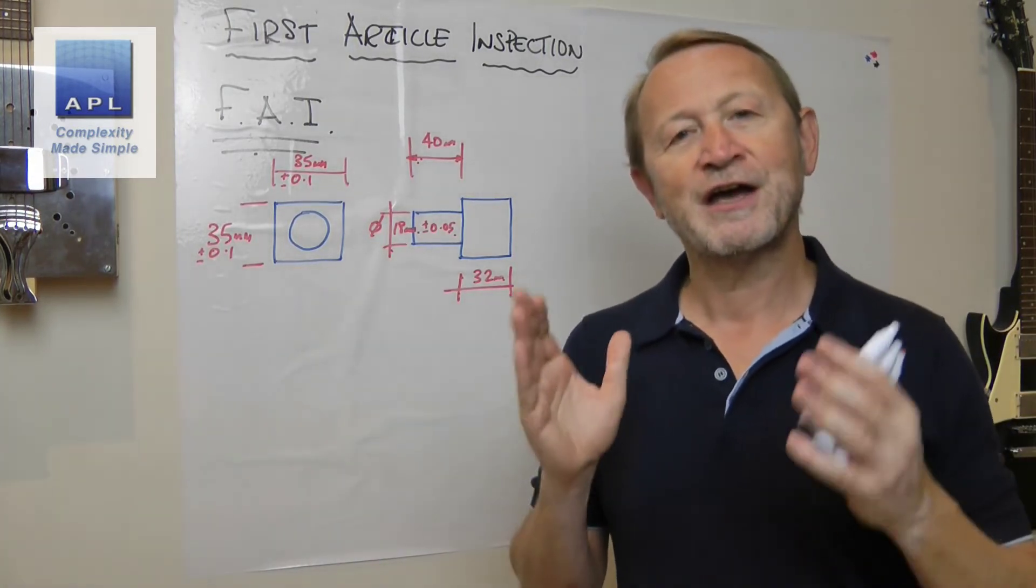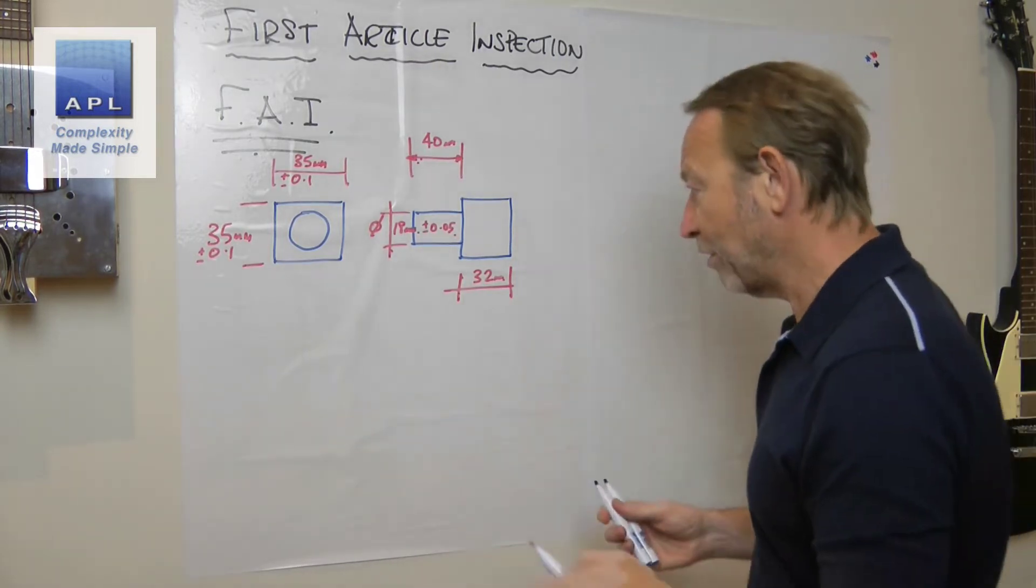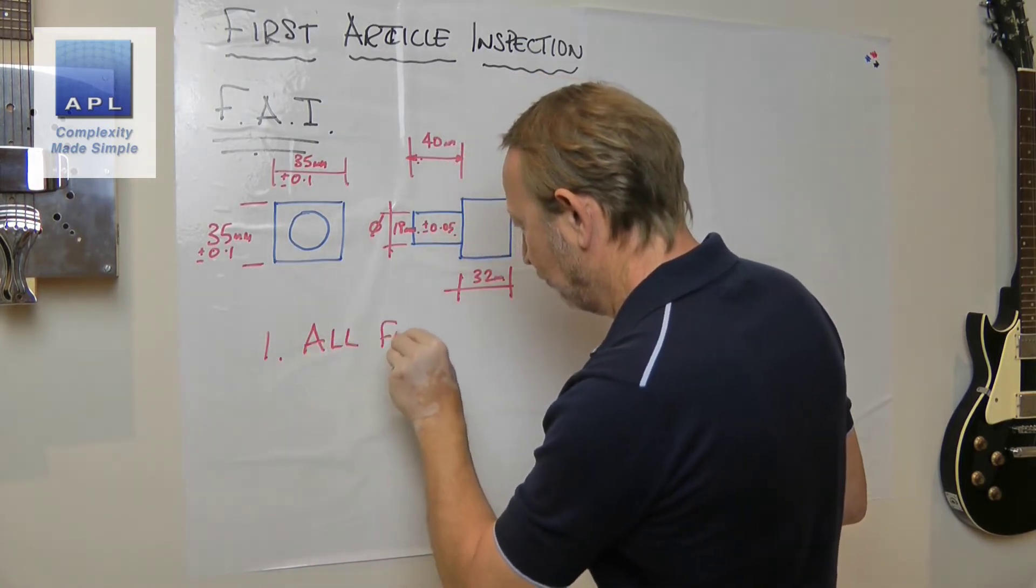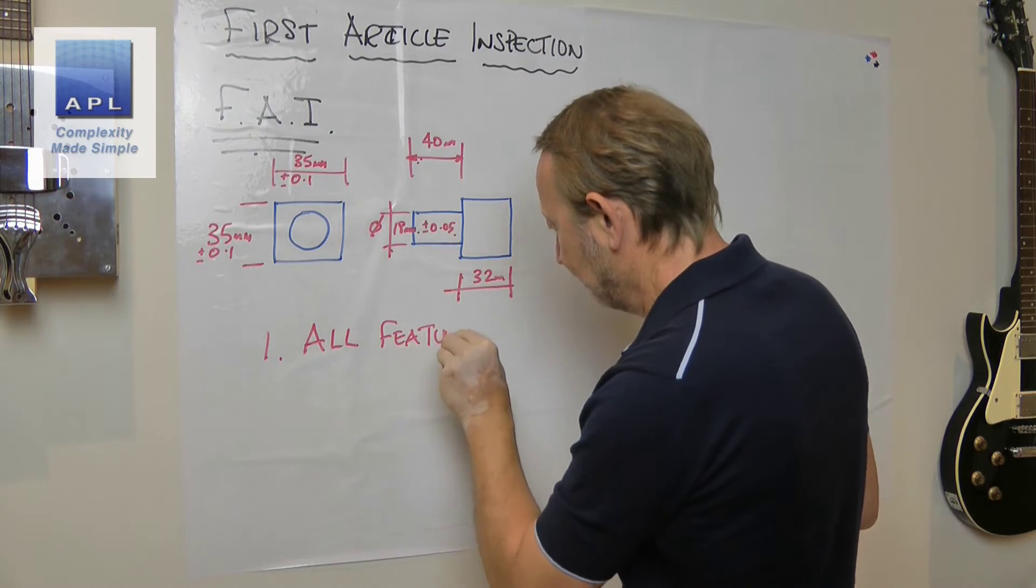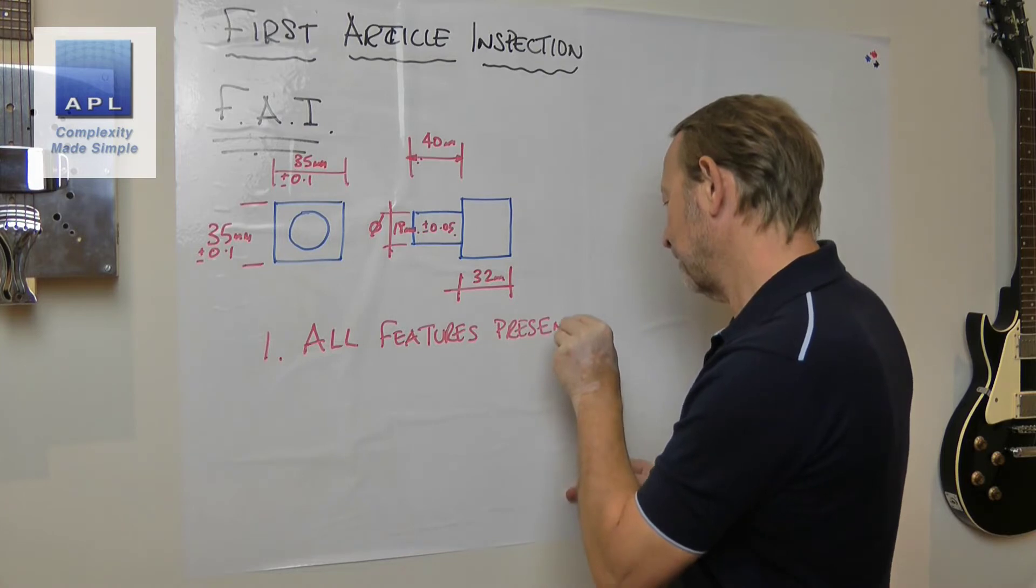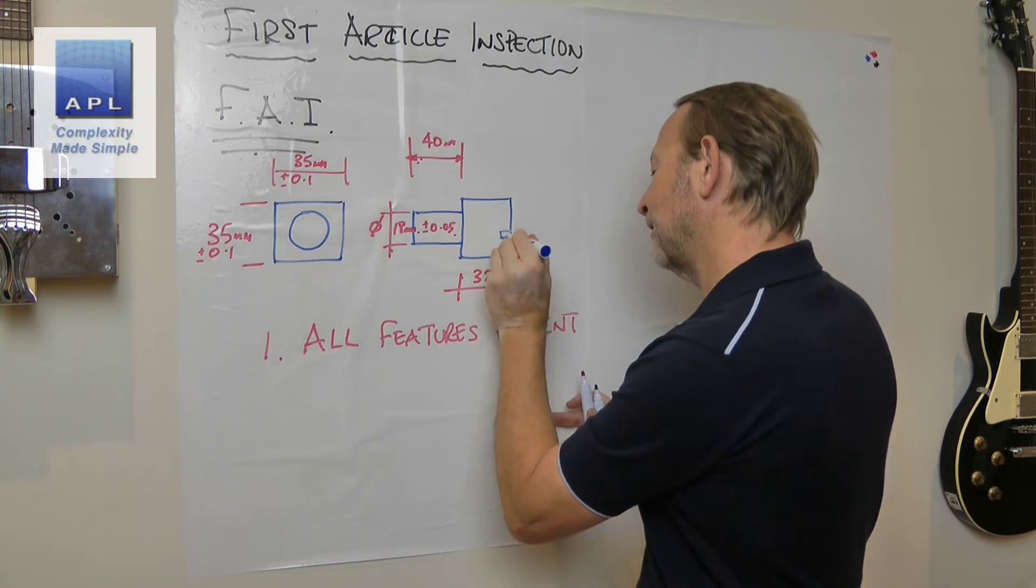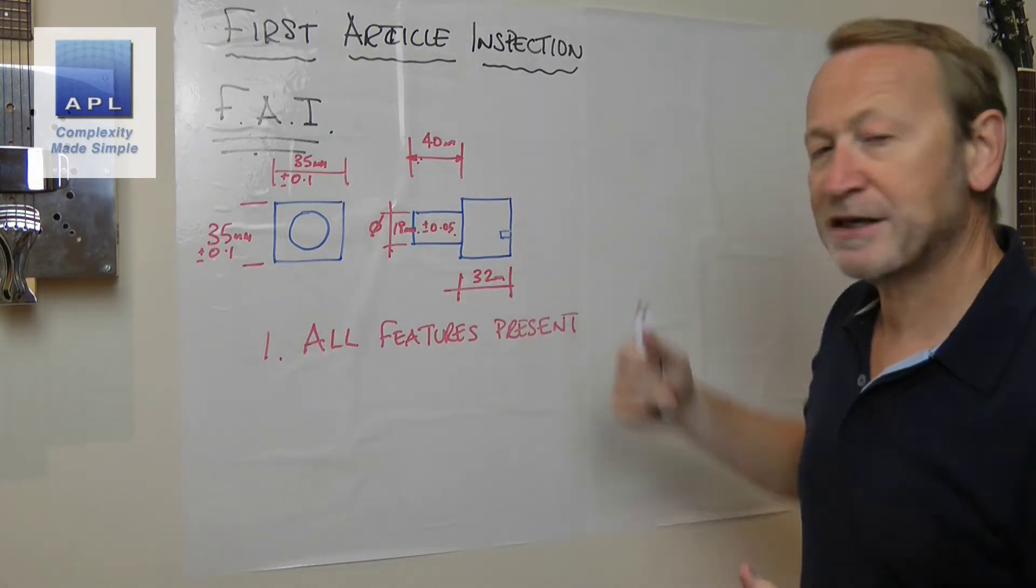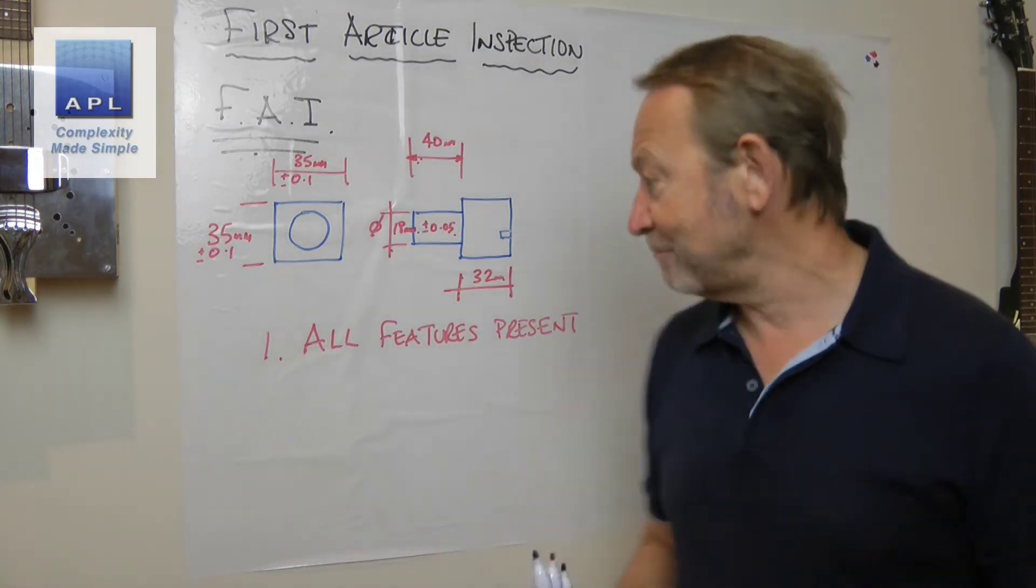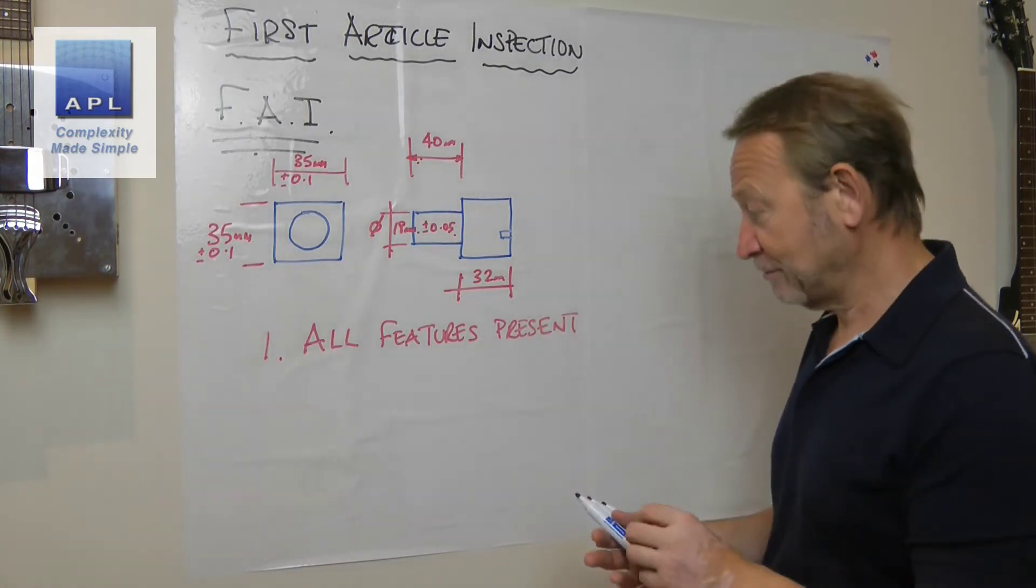All it's capable of telling you is that you made the item look the way the drawing wanted it to look. In other words, every feature is present. Number one: all features are present. Let's make it a little bit more complex. Let's say there's a little cutout there. It would be dead easy to miss that thing when you're programming your computer. So all features are present.